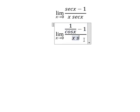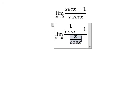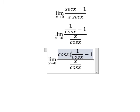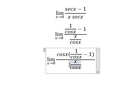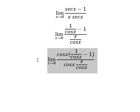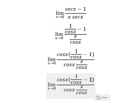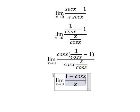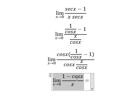We rewrite it as one over cosine x, then multiply by cosine x on both the numerator and denominator. This gives us one minus cosine x on the numerator and x on the denominator. Now we apply the limit formula here.